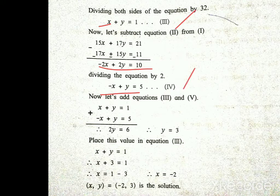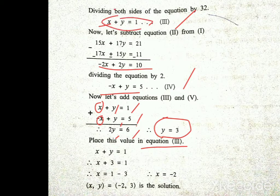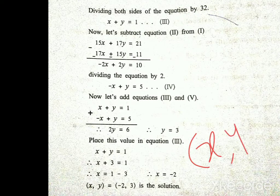Equations 3 and 4 are simple equations. Adding equation 3 (x plus y = 1) and equation 4 (minus x plus y = 5), x and minus x cancel. So 2y is equal to 6, therefore y is equal to 3. The solution is the ordered pair x, y, where x is minus 2 and y is 3.